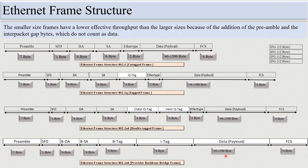The answer to the query is: smaller size frames have a lower effective throughput than larger size frames, because of the addition of the preamble and the inter-packet gap bytes, which do not count as data. If the data payload byte is smaller, the frame size will be smaller, and if the data payload byte is larger, the frame size will be larger.